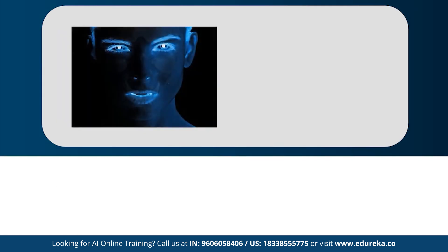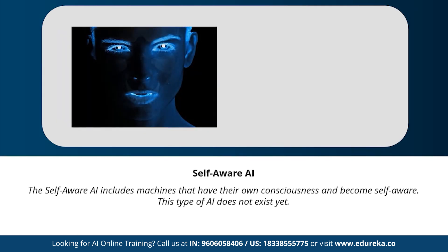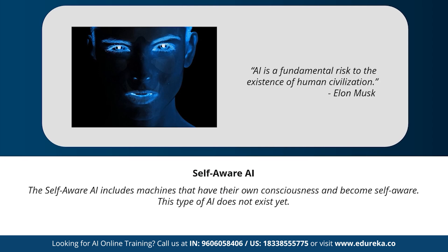Moving on to our last type of artificial intelligence: self-aware AI. This type of AI involves machines that have their own consciousness and become self-aware. This is a little far-fetched, but achieving a stage of super intelligence might be possible in the future. Geniuses like Elon Musk and Stephen Hawking have constantly warned us about the evolution of AI. Do you ever think we'll reach the stage of artificial super intelligence? Let me know your thoughts in the comments.